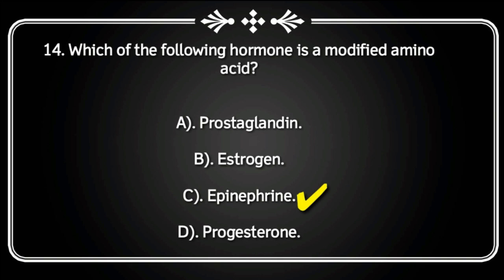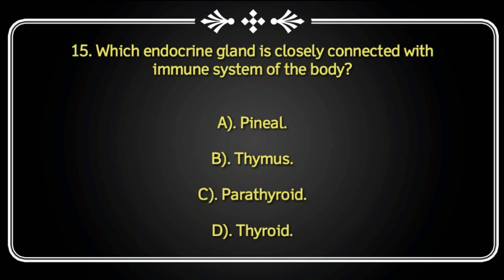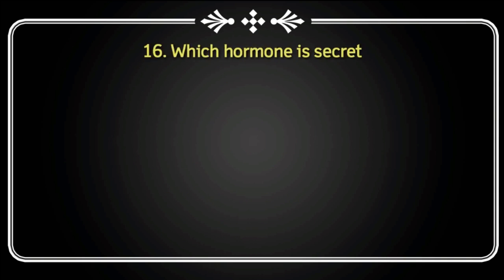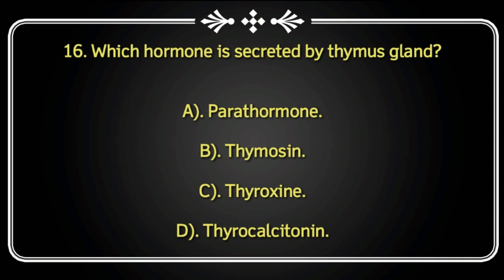Which endocrine gland is closely connected with the immune system of the body? Pineal, thymus, parathyroid, or thyroid? Correct answer is thymus gland. Next question: Which hormone is secreted by the thymus gland? Thymosine, thyroxine, parathyroid hormone, or thyrocarcitonin? Correct answer is thymosine.